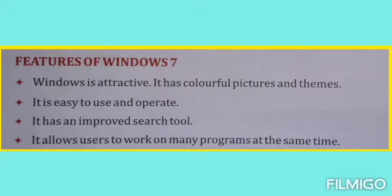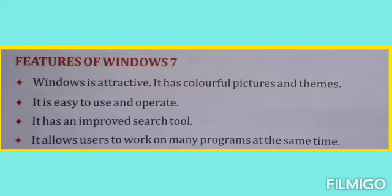Now let's learn about the features of Windows 7. Like Windows, Windows 7 is also an operating system. Feature number one: Windows is attractive. It has colorful pictures and themes. These themes or pictures we can change as per our wish.